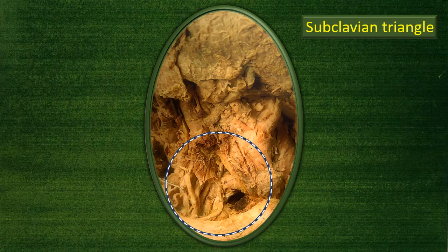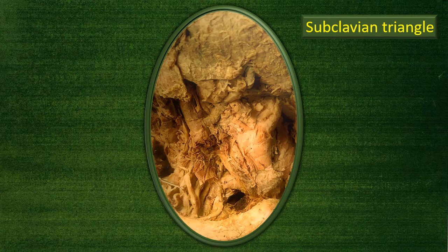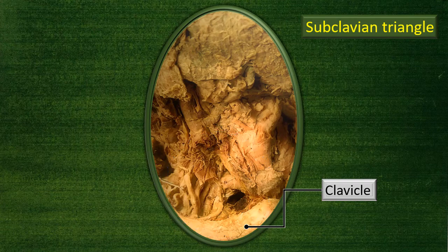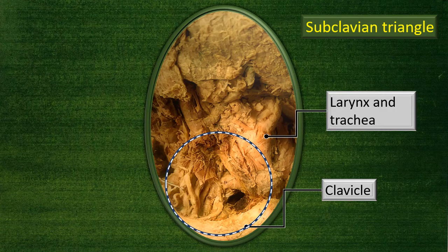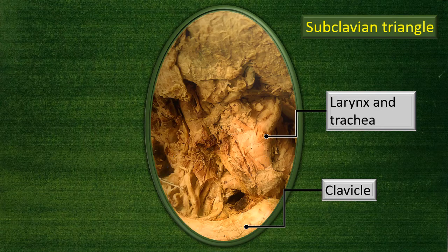Here I have removed the inferior belly of the omohyoid, but this is yet another specimen. Just for orientation — because it is a different specimen — let me recap some important features to identify the right neck. The clavicle is at the back; the larynx and trachea give orientation. The upper part is the head region, the lower part is the thoracic region going down, and the circled area is the lower part of the posterior triangle. Having removed the inferior belly of the omohyoid, it is strictly a subclavian triangle plus a large part of the occipital triangle.